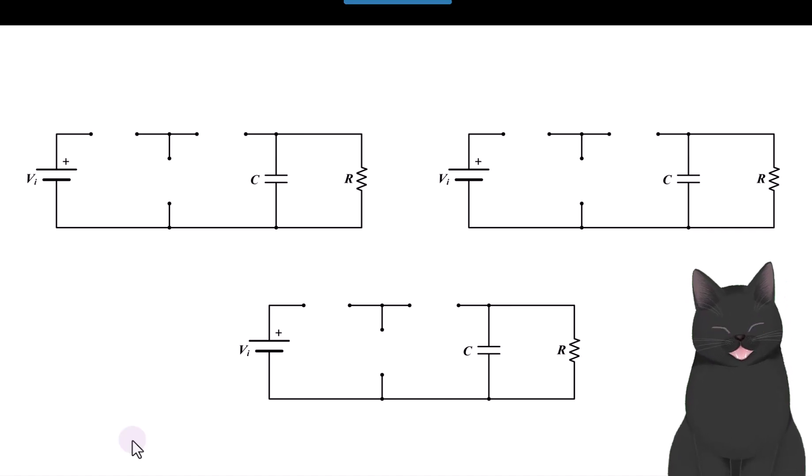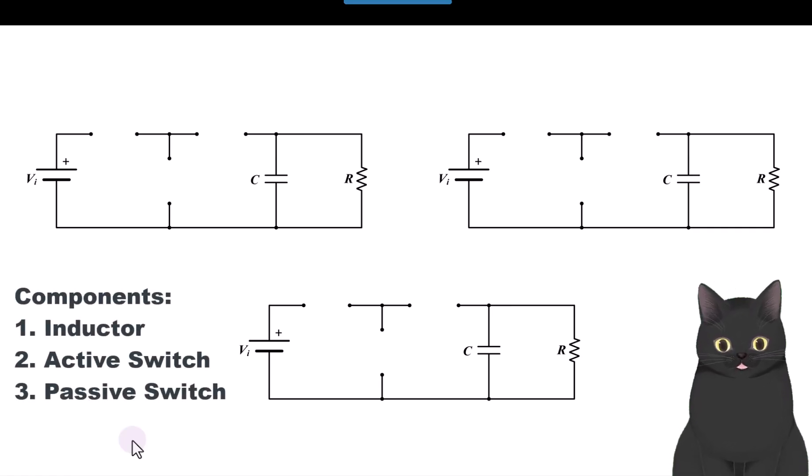Well, the converters are all about the inductor, and you'll see we have these three different empty converters. The inductor, if you memorize the location of the inductor, then you can pretty easily figure out where the other two components are. So there's three components: inductor, the active switch, and the passive switch.